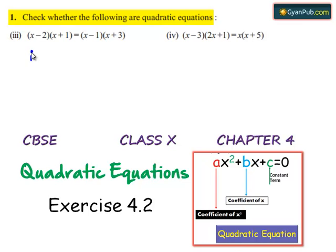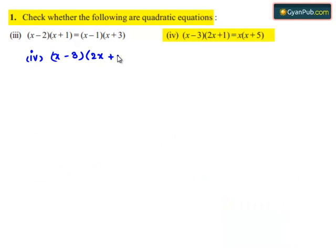Coming to the fourth bit, which is x minus 3 times 2x plus 1 equals x times x plus 5.